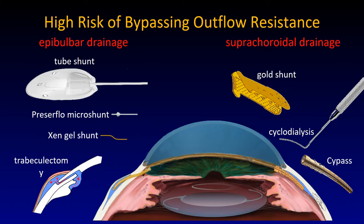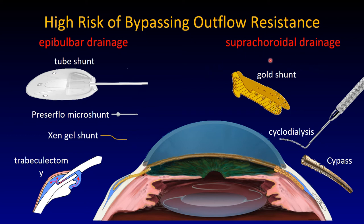Surgical modulation. There is a high-risk group of surgical devices and modalities. Tube shunts, micro-shunts, the Preserflo, and the XEN gel shunt basically drain fluid from the anterior chamber into a pocket underneath the conjunctiva. Classical trabeculectomy does the same, meaning there is basically nothing preventing pressures from reaching as low as zero, since there is no pressure on the other side. Suprachoroidal drainage is unfortunately not looking so good anymore — the graveyard of implants is large.